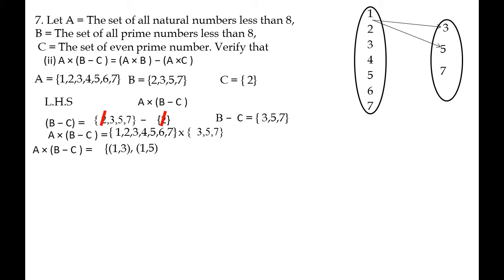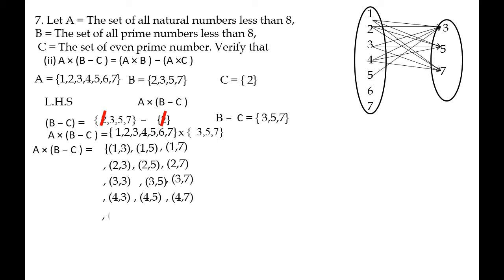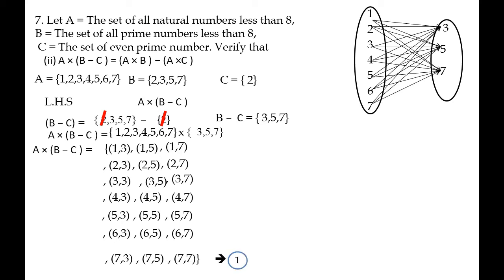The ordered pairs are: (1,3), (1,5), (1,7), (2,3), (2,5), (2,7), (3,3), (3,5), (3,7), (4,3), (4,5), (4,7), (5,3), (5,5), (5,7), (6,3), (6,5), (6,7), (7,3), (7,5), (7,7).